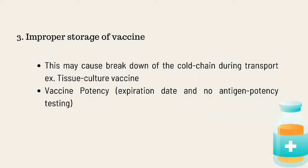Third, Improper Storage of Vaccine. This may cause breakdown of the cold chain during transport, for example with tissue culture vaccines. The effectiveness of a vaccine depends on the viability of the agent in the vaccine and its replication in the birds. Improper storage may cause a decrease in vaccine potency. The potency of a vaccine is maintained for a certain period; however, its viability may be lost due to a past expiration date.